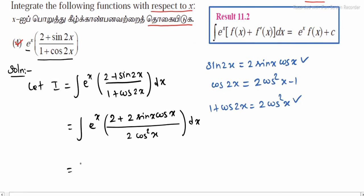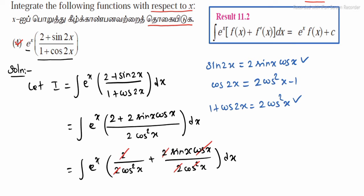The 2s will cancel, and cos x square cancels, leaving us with the simplified form.